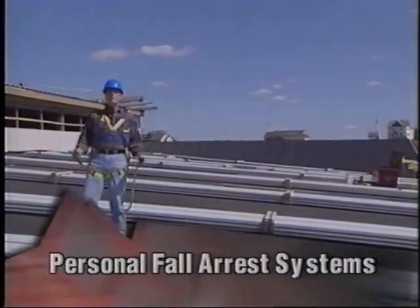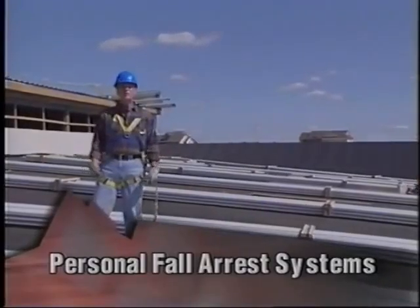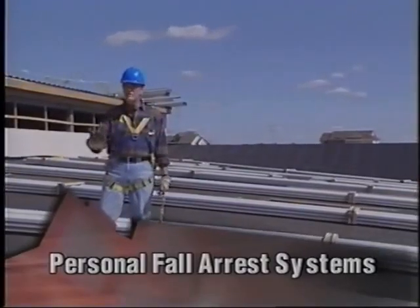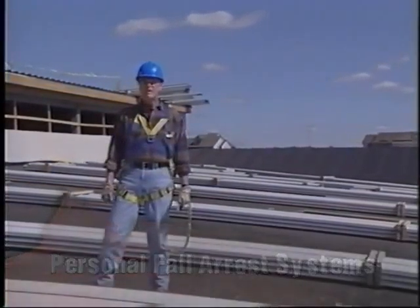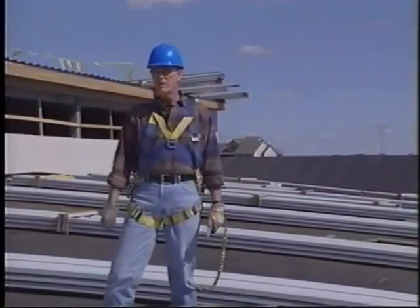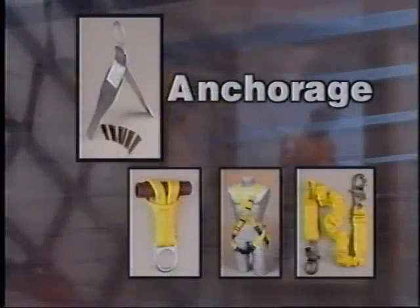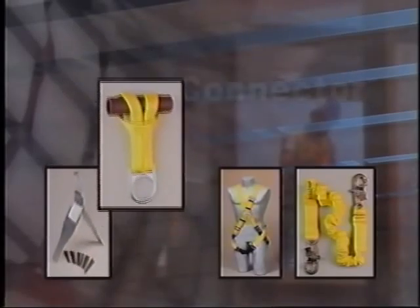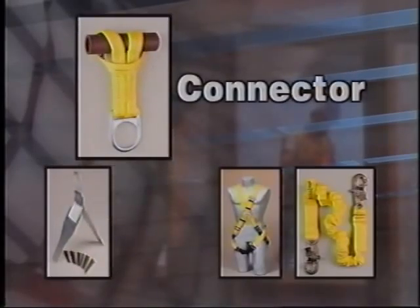The other conventional fall protection method is called a personal fall arrest system, which is used to arrest a fall from a working level. Personal fall arrest systems consist of four main components: an anchorage — the secure point where lifelines, lanyards, or deceleration devices can be attached; connectors, including D-rings and snap hooks, which couple parts of the personal fall arrest system and positioning device systems together.